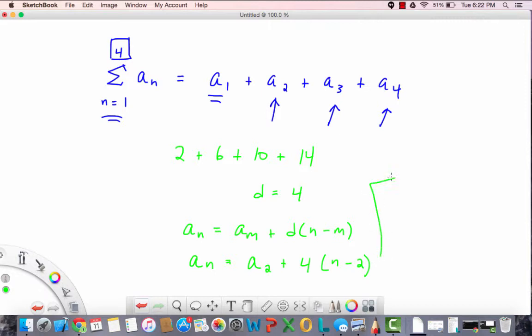Now let's keep going. Simplify this: a sub n equals a sub 2 plus we distribute 4 times quantity n minus 2, which is 4n minus 8. That simplifies to a sub n equals a sub 2, which we know is 6, plus 4n minus 8, and finally we have 6 minus 8 is negative 2 plus 4n.